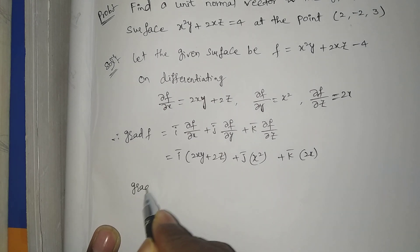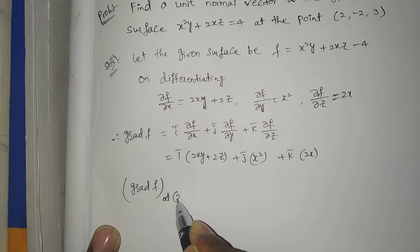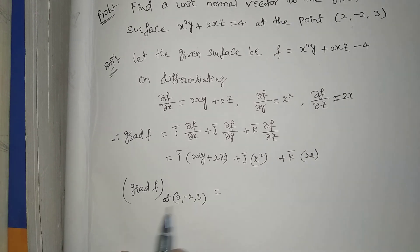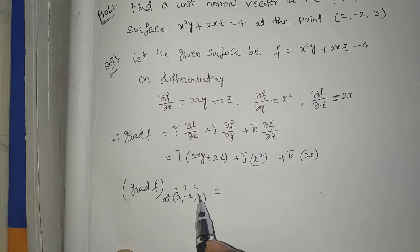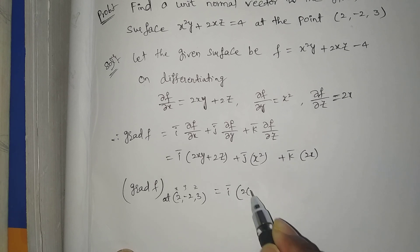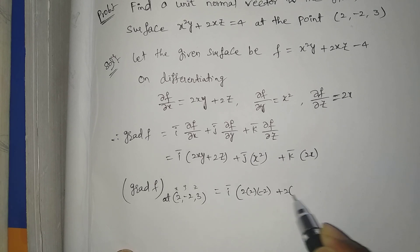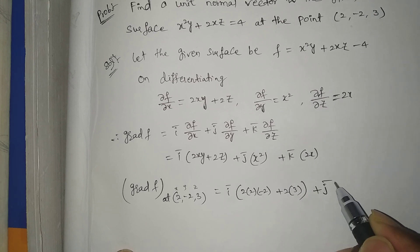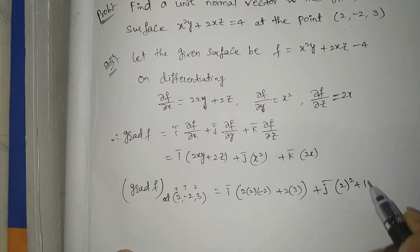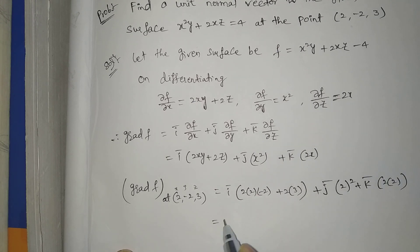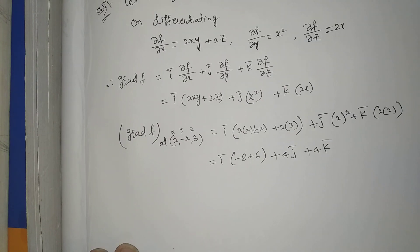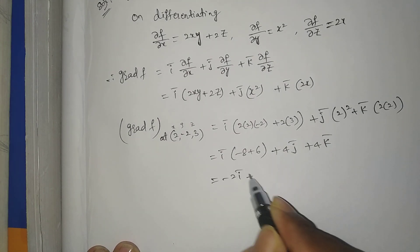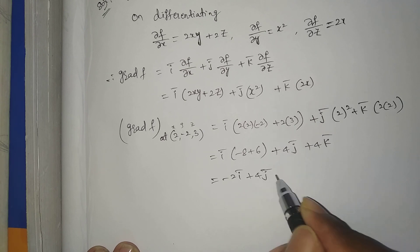Next, grad F at the point (2, minus 2, 3): substituting x=2, y=minus 2, z=3 gives i-bar(2 into 2 into minus 2 plus 2 into 3) plus j-bar(2 squared) plus k-bar(2 into 2). That equals i-bar(minus 8 plus 6) plus 4 j-bar plus 4 k-bar, giving minus 2 i-bar plus 4 j-bar plus 4 k-bar.